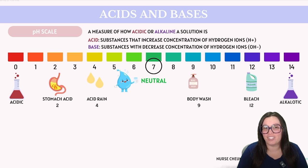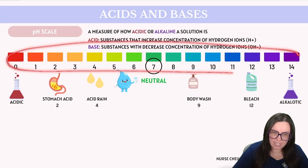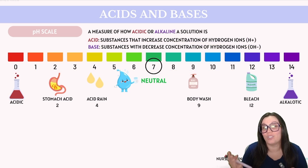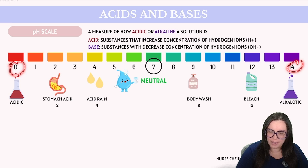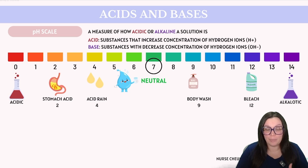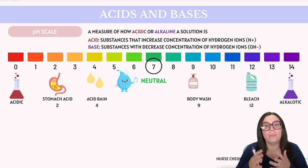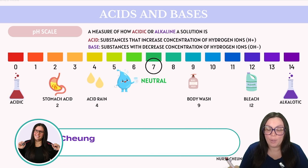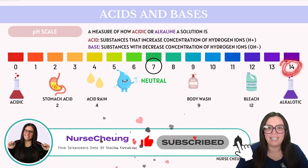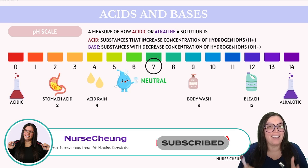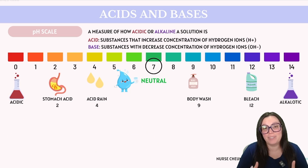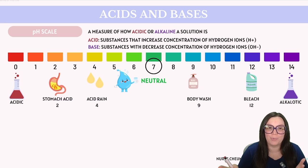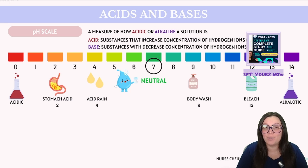Let's explore the pH scale and the nature of acids and alkalines. The pH scale is used to determine whether a solution is acidic or alkaline, ranging anywhere from zero all the way up to 14. The lower numbers closer to zero are going to be more highly acidic, while the higher numbers closer to 14 are going to signify high alkalinity. A substance is considered neutral if it has a pH of 7, just like pure water, which is neither acidic nor alkaline.